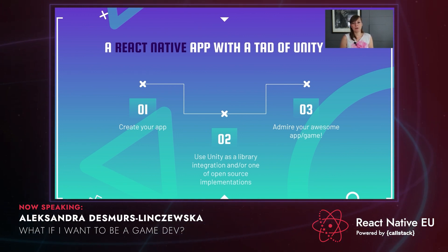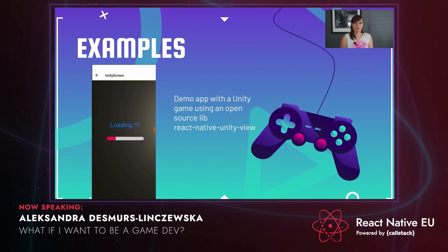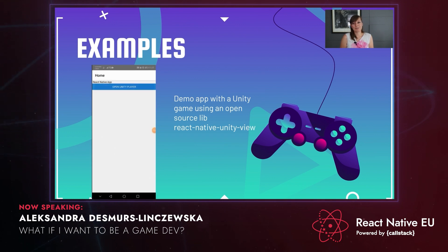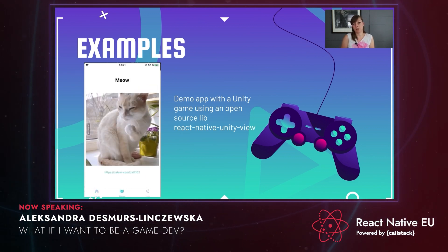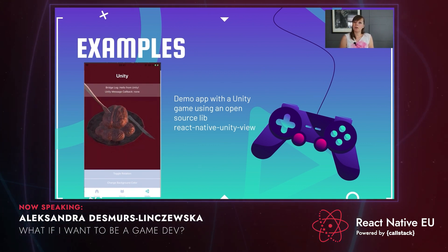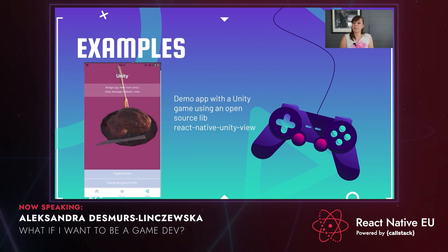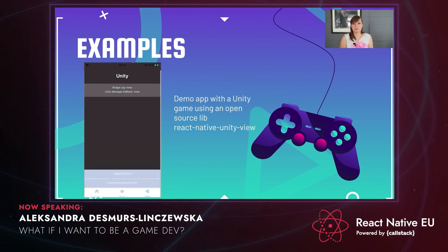Here are some examples of such integrations. You can see a shooter game inside of a React Native view — a pretty big, complex game — but at any time you can go back to your React Native app. Here you can see another example of an app which has a React Native app with a Unity game presented on a tab. If you look closely, you can actually see there are buttons in the Unity view where you can change the background or rotation of a 3D object. Can you imagine trying to render this 3D object in JavaScript? That would be a lot of work, but in Unity it's pretty much a few clicks.